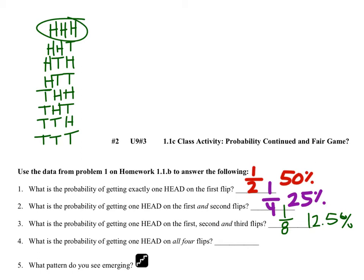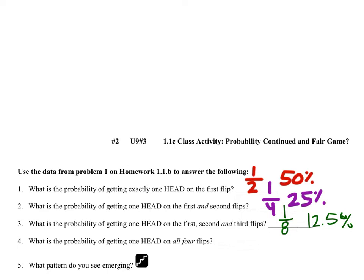We get 12.5% by dividing one by eight and multiplying by 100. Now we expand to all four flips. There are going to be 16 outcomes — we can see the denominators going two, four, eight, so the next is sixteen. Let's confirm by listing all of them: heads-heads-heads-heads, heads-heads-heads-tails, heads-heads-tails-heads, heads-heads-tails-tails, and continuing the pattern.